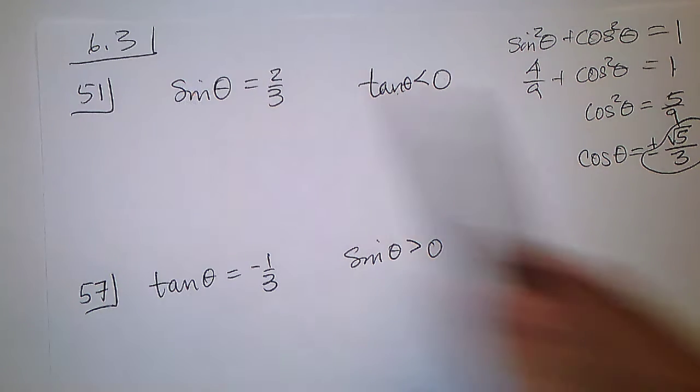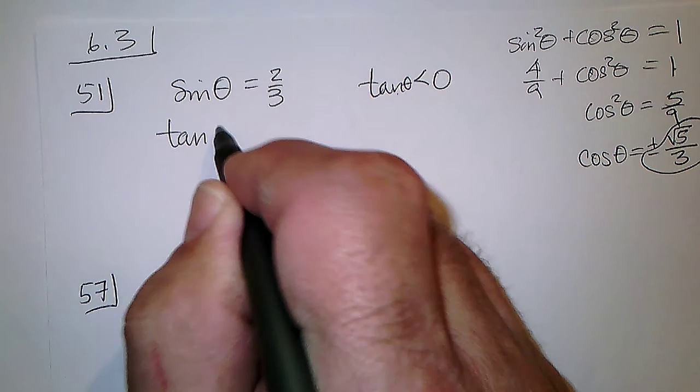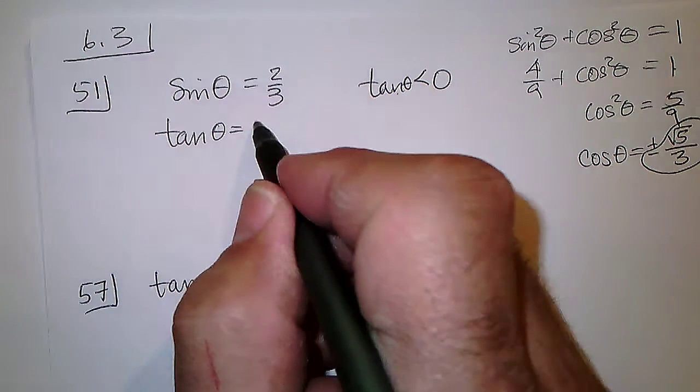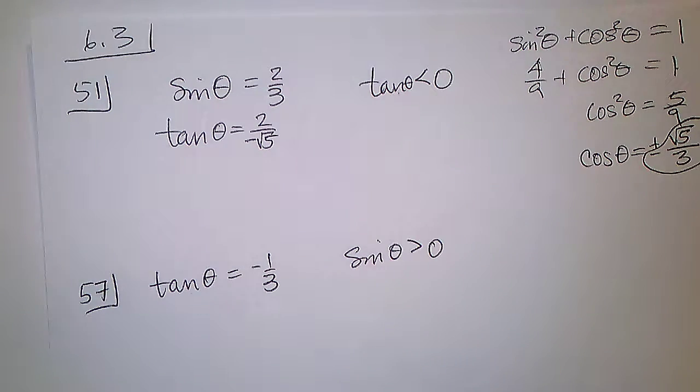So we now know the sine and the cosine, so the tangent would be 2 over negative square root of 5, and that makes it less than zero.